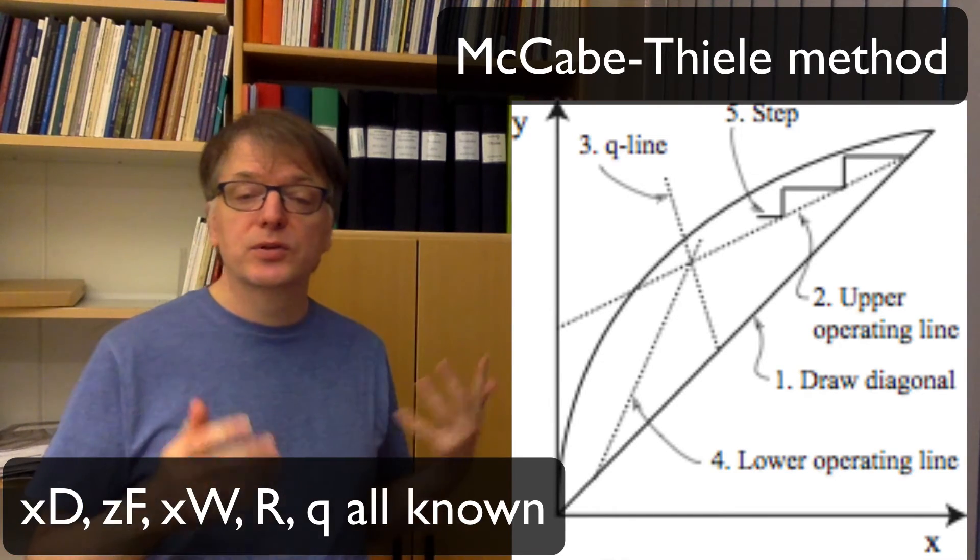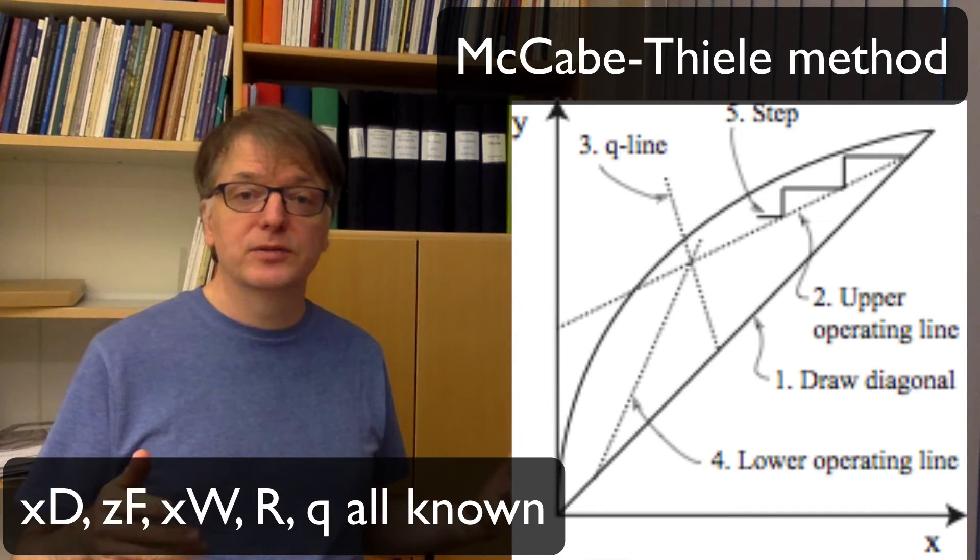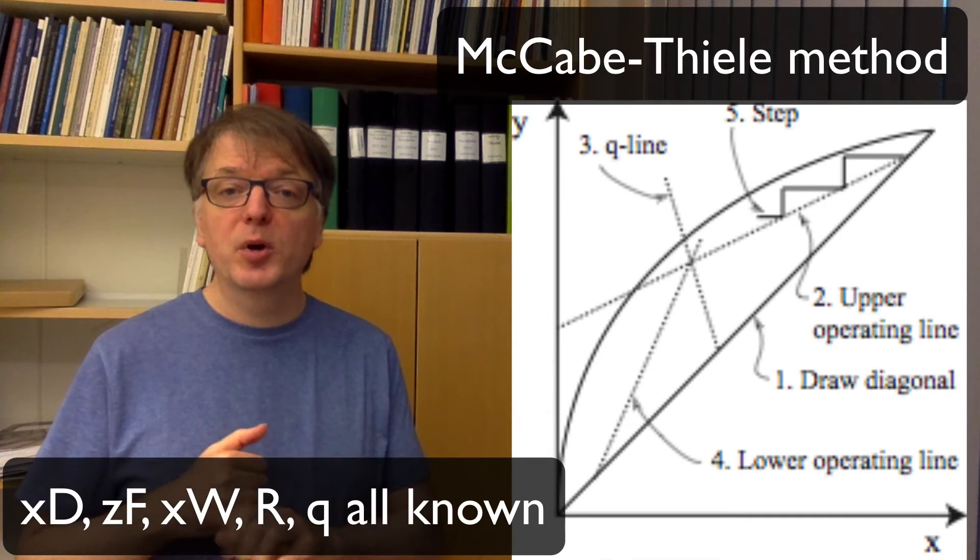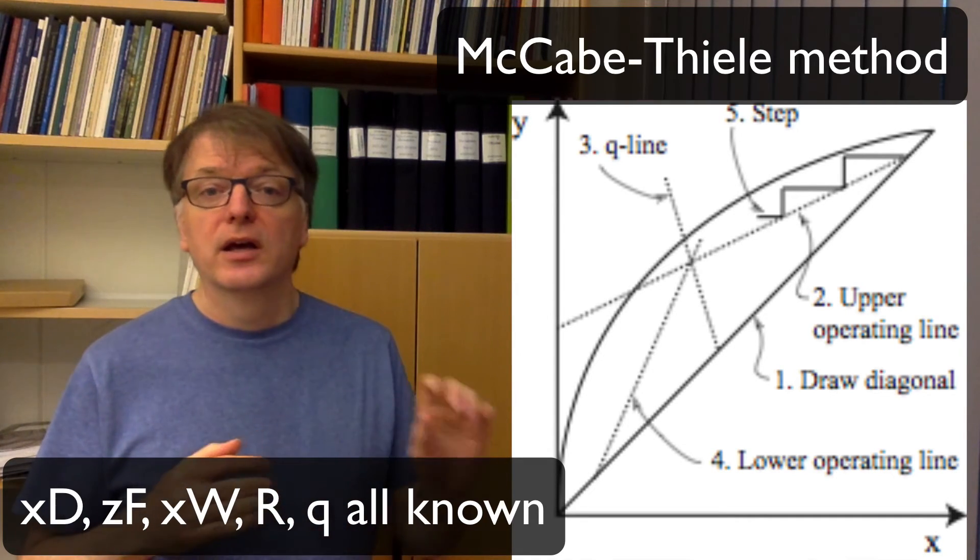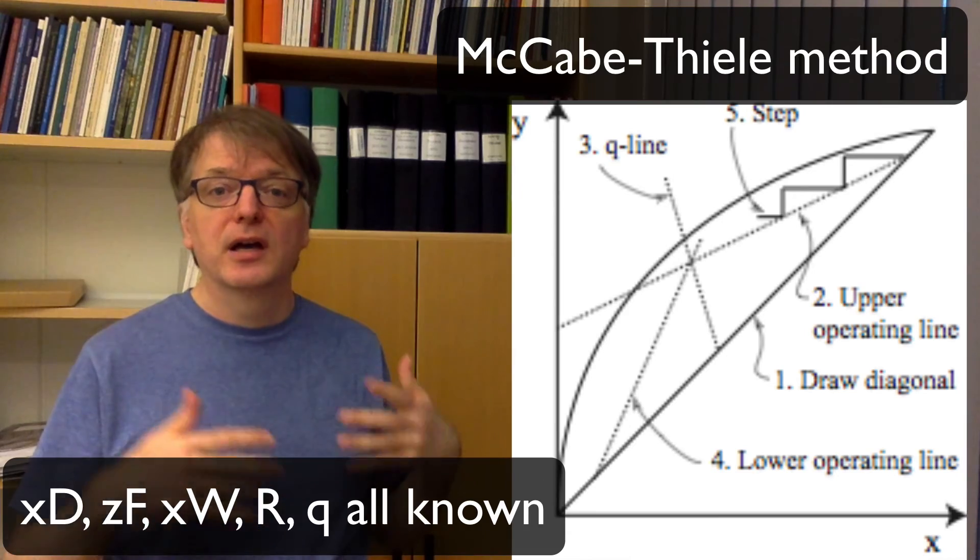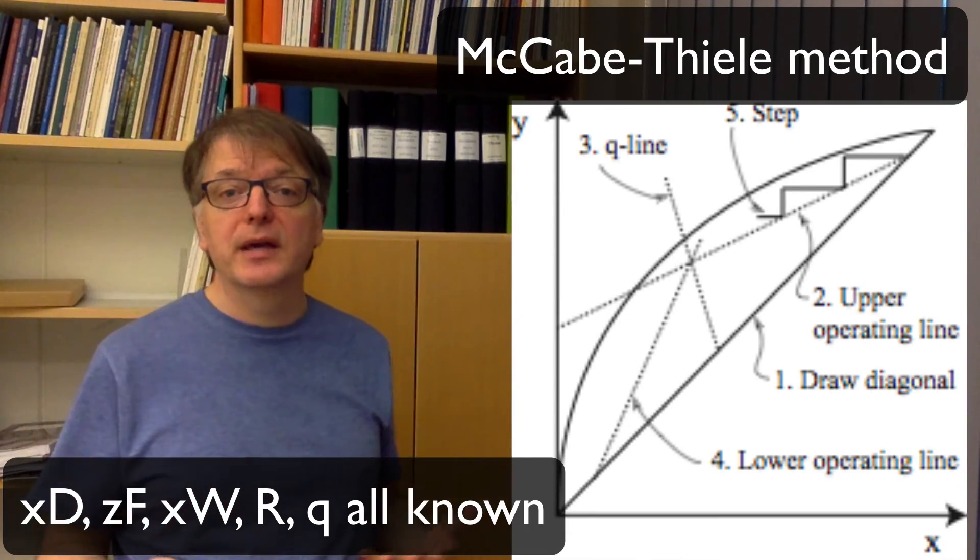So what we should do is to draw the diagonal if that isn't drawn already, and then we draw the upper operating line, the q line, the lower operating line, and then we draw steps, and the number of triangles we make in the diagram is the number of equilibrium stages.